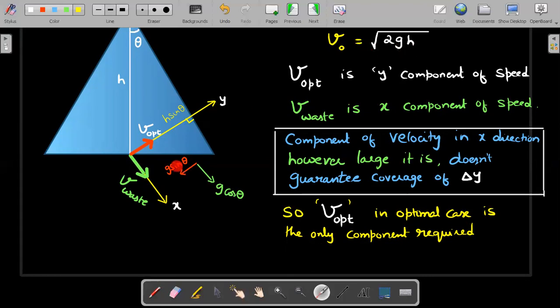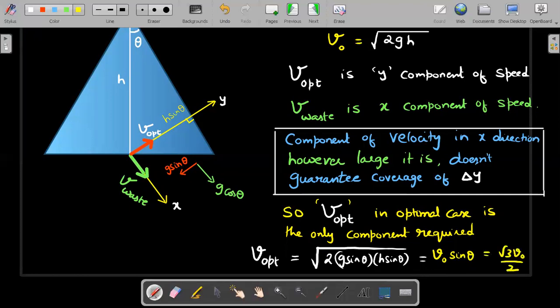You are now looking at the same equation at the top with varied values of g and h. g effectively has become g sin θ, and h has become h sin θ. So V_opt should be √(2g sin θ × h sin θ). Since √(2gh) is already given as V0, this would be V0 sin θ. Since θ is 60 degrees, the answer to this question is (√3/2)V0.